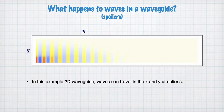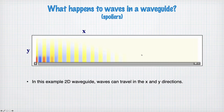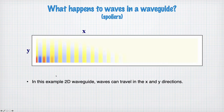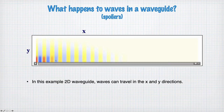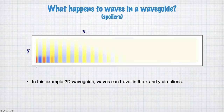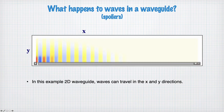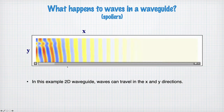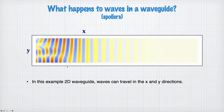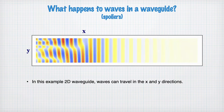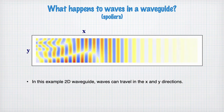What happens to waves in a waveguide? Here is an example of a wave propagating in a 2D waveguide, where the wave can propagate along the x-direction but in the y-direction we have boundary conditions at the surfaces that mean the wave cannot propagate — rather it's reflected off these boundaries. We launch a wave with more amplitude on one side, and after a while it starts to resolve into different components.